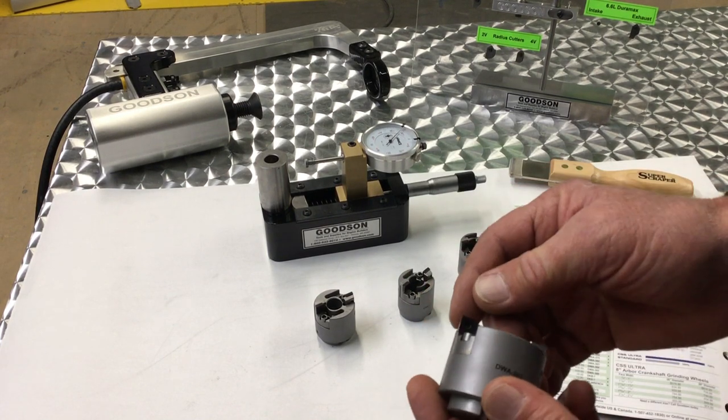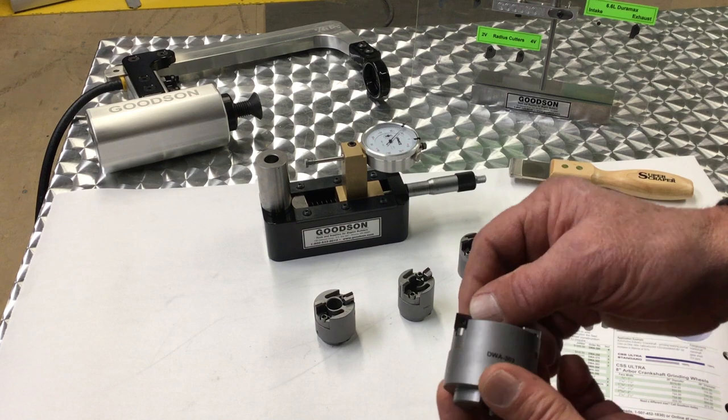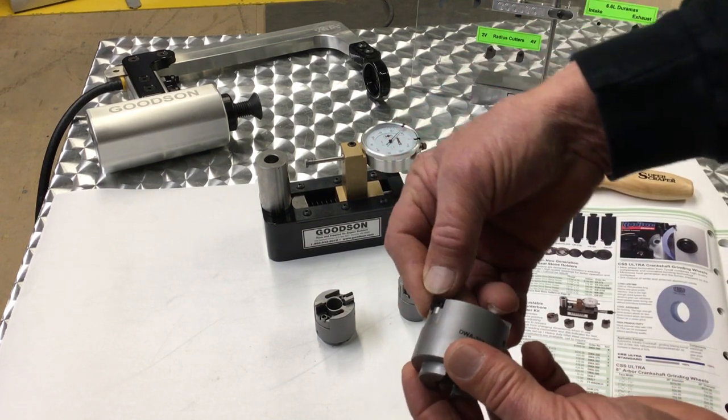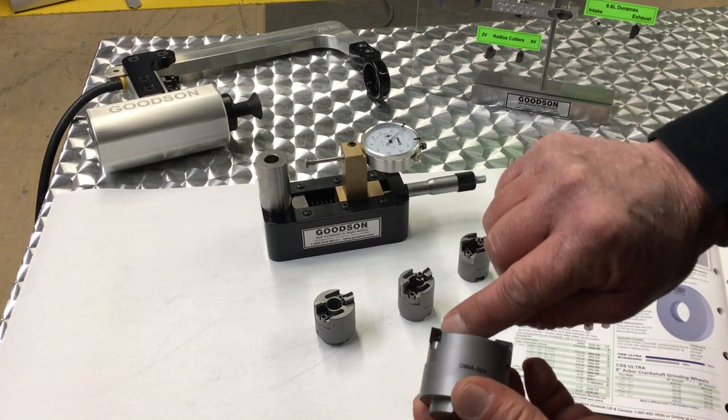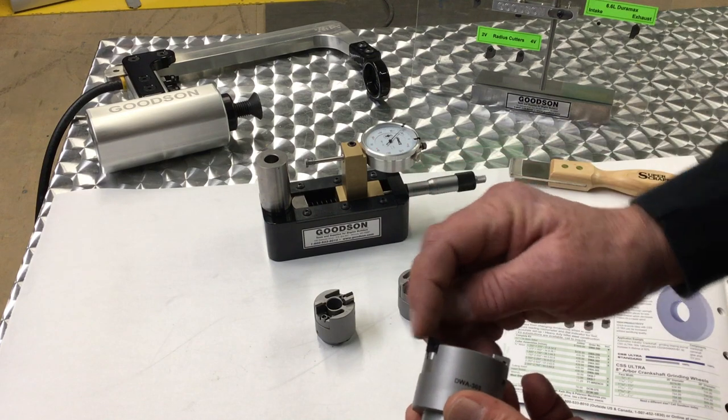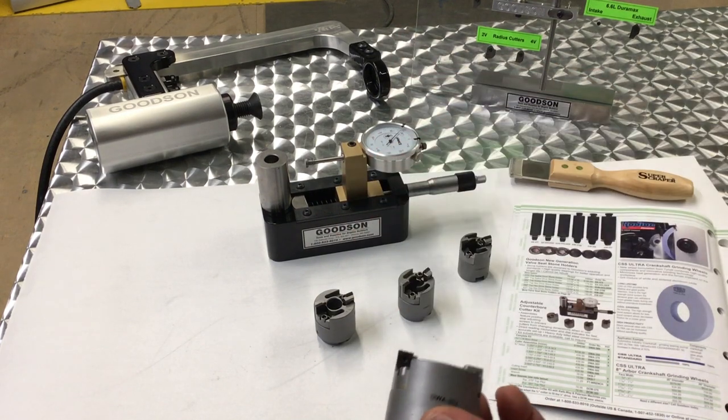This is an indexable cutter. In other words, when this cutter here gets chipped or worn, we can undo this set screw, rotate this thing 90 degrees, expose a new edge, and we're back in the business of counterbore cutting.